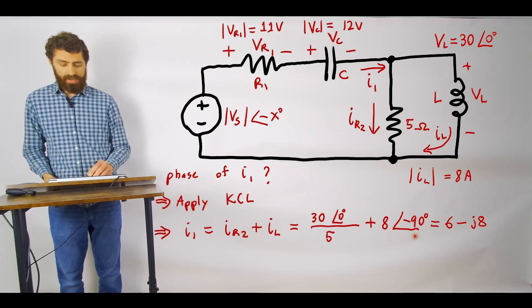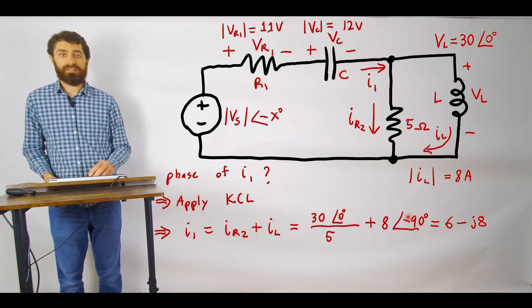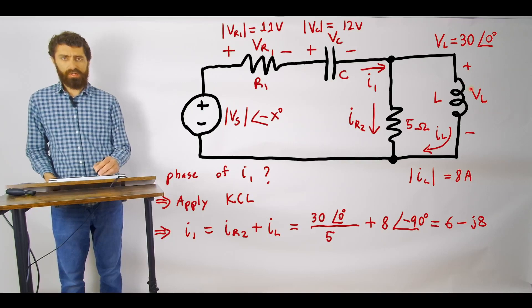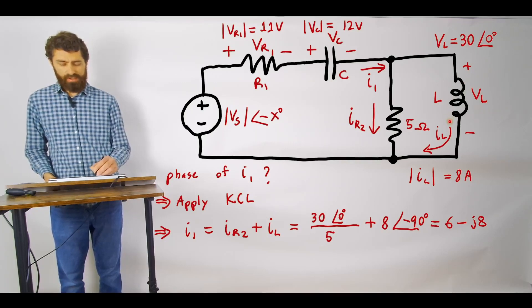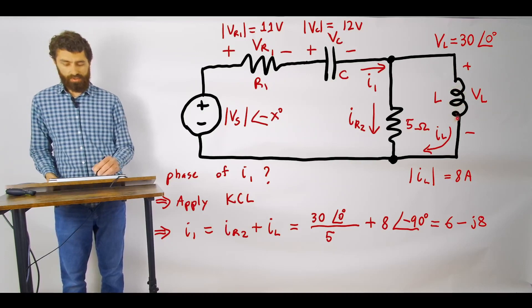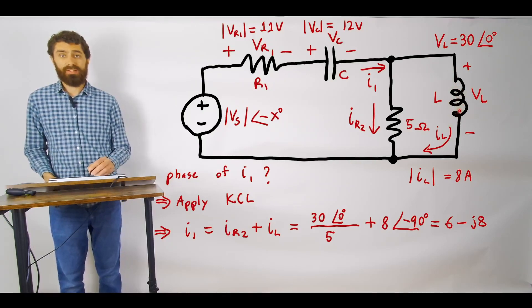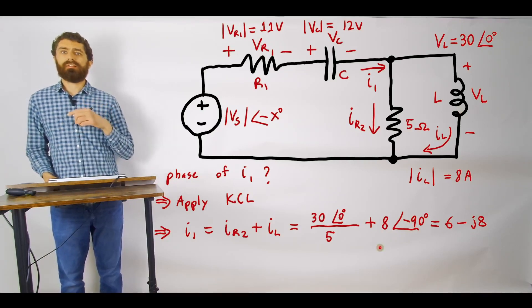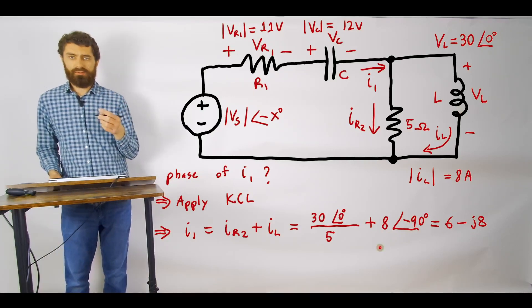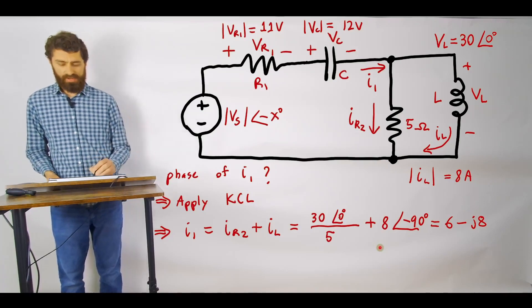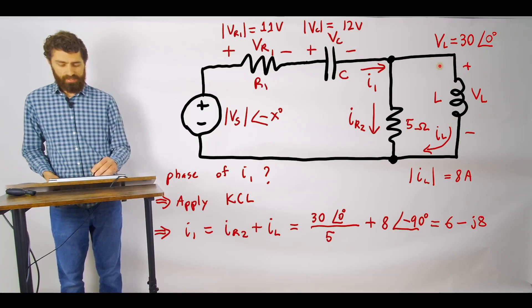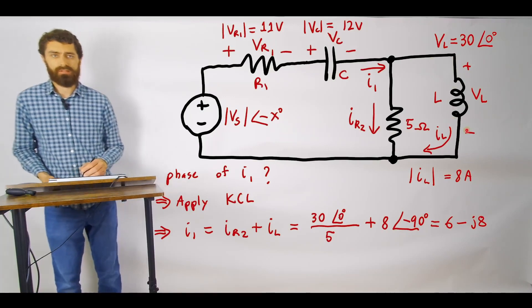And then we are given the magnitude of the current through the inductor which is 8 amps. So that'll be 8 angle minus 90 degrees. The reason it is minus 90 degrees is because you have to remember that the current through an inductor always lags the voltage by minus 90 degrees. So or I should say it lags the voltage by 90 degrees which means you subtract 90 and that will give you the phase of the current through the inductor.